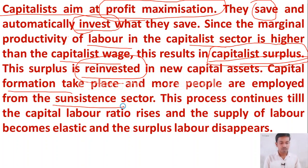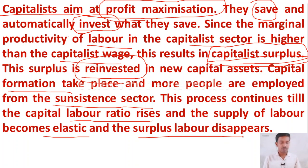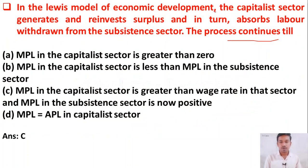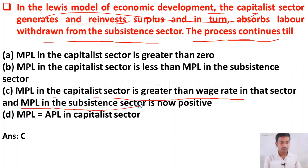Capital formation takes place, more people are employed from the subsistence sector, and this process continues till the capital-labor ratio rises, the supply of labor becomes elastic, and surplus labor disappears. The process continues till marginal productivity of labor in the capital sector is greater than the wage rate in that sector and marginal productivity of labor in the subsistence sector is no longer positive. So option C is the correct answer.